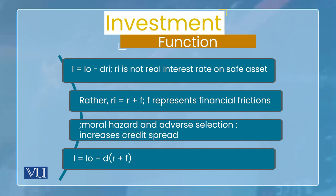جب اس R + F کو ہم اپنے actual investment function میں substitute کریں، تو final form میں ہمارا investment function بنے گا: I = I₀ − D(R + F)۔ اس کا مطلب ہے کہ جو safe asset پر return ہوتا ہے وہ opportunity cost کے sense میں یا ایک benchmark کے sense میں investment کو affect کرتا ہے، اور financial friction جو ہے وہ loan کے راستے میں رکاوٹ بنتا ہے اس وجہ سے investment کے process کو affect کر سکتا ہے۔